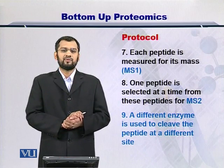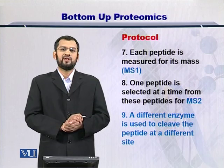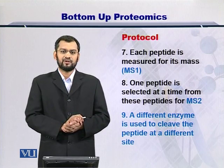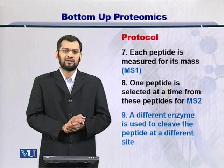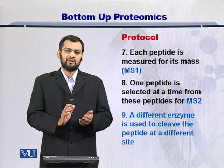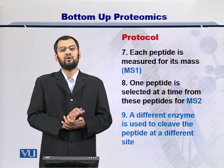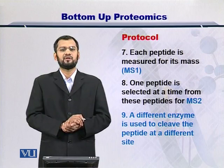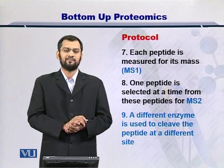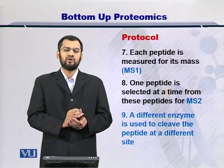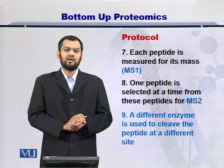Once you have obtained the peptides from the enzymatic digestion, you send them into the mass spectrometer. Once you inject these peptides into the mass spectrometer, they are deflected within the magnetic field and you can obtain their molecular weight or mass. This is the first MS, or simply MS1. MS1 would give you the molecular weight of these peptides.